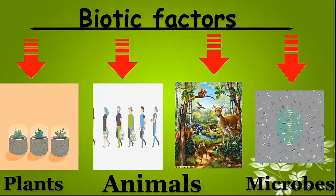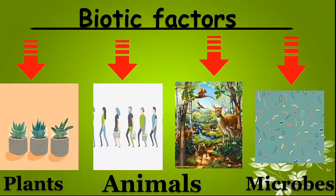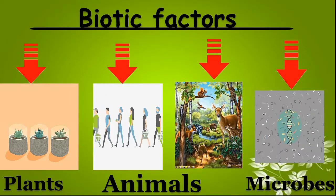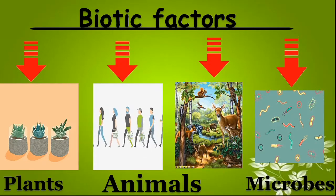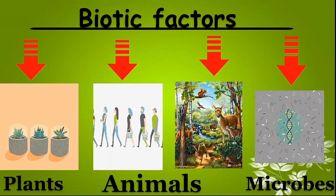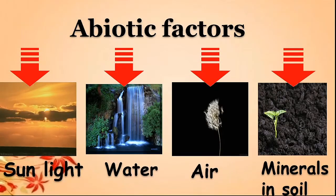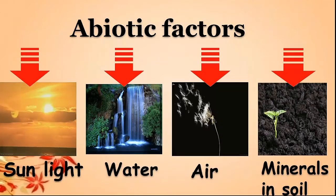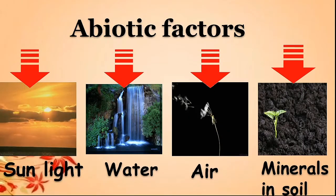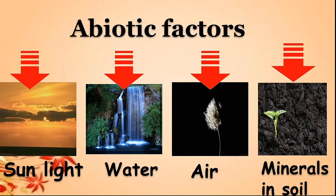Now let's see biotic factors. Biotic factors are living things of our environment such as plants, animals and microbes. Next, abiotic factors. Abiotic factors are non-living things such as sunlight, water, air and minerals in soil.